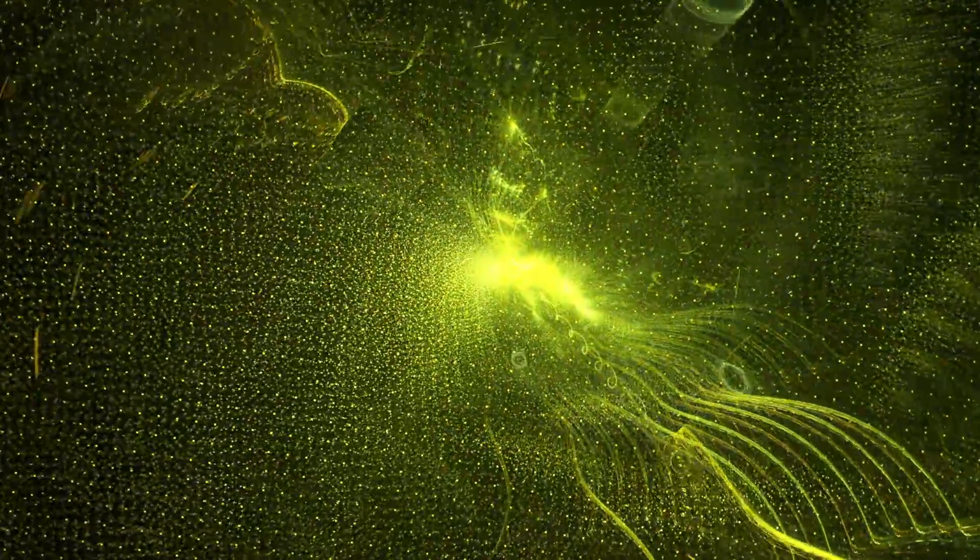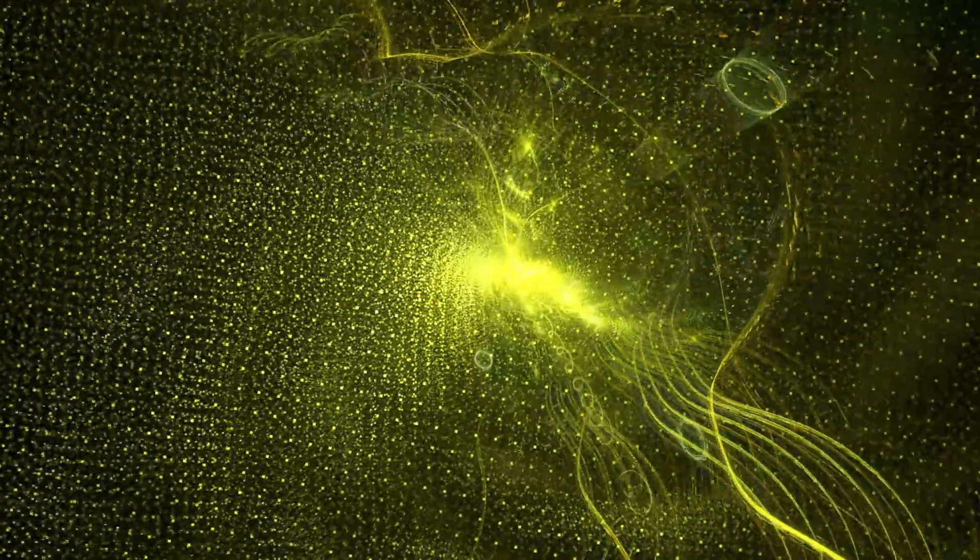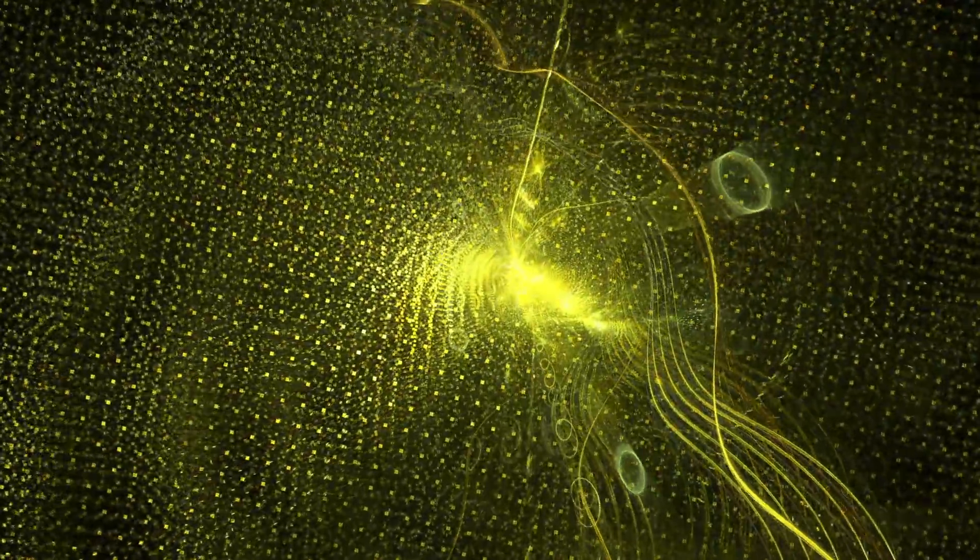In 1999, Draves expanded the Fractal Flame algorithm to animate these images. He implemented a server in Perl, Unix, and C to run a distributed render farm.